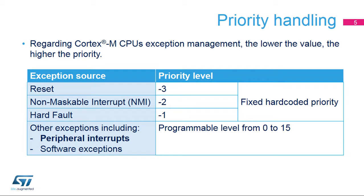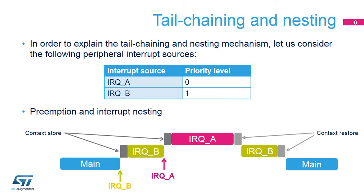The priority of any of the 63 peripheral interrupt requests is programmable in a dedicated priority field located in the Cortex-M4 Nested Vector Interrupt Controller registers. The Nested Vector Interrupt Controller provides several features for efficient handling of exceptions.